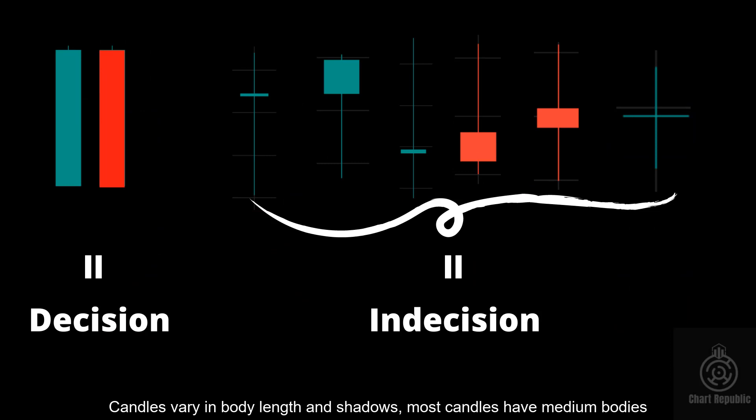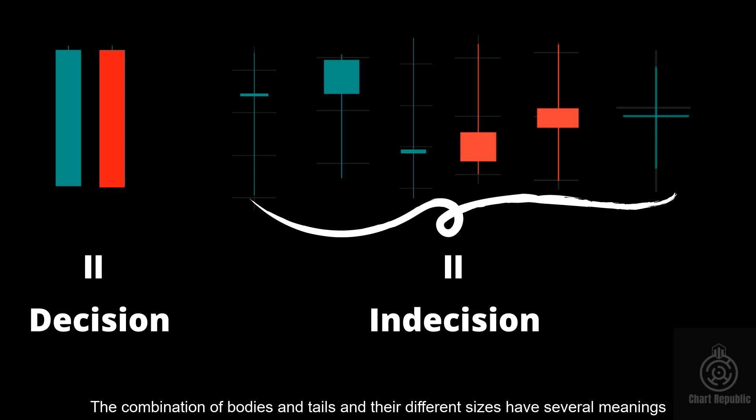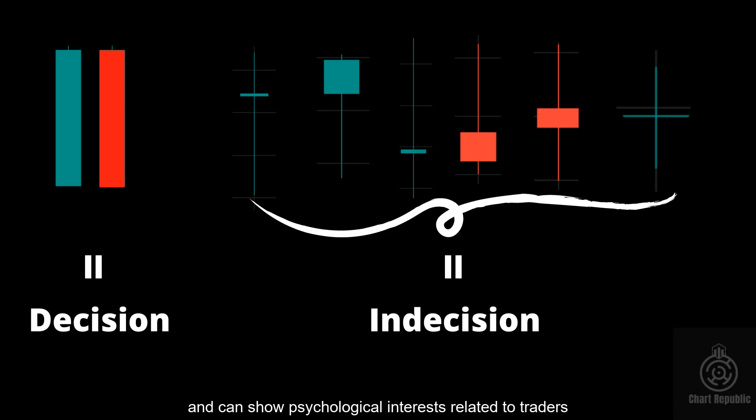Candles vary in body lengths and shadows. Most candles have medium bodies, but some may have shorter or longer bodies, and some may have longer or smaller shadows. However, these ratios differ from market to market. The combination of bodies and tails and their different sizes have several meanings, and can show psychological interest related to traders.